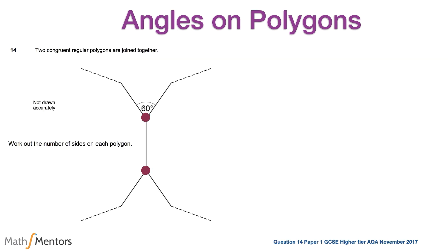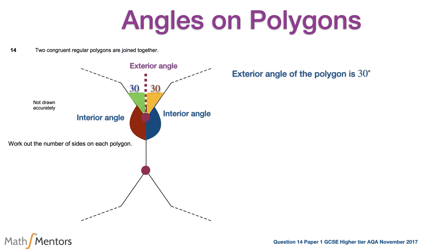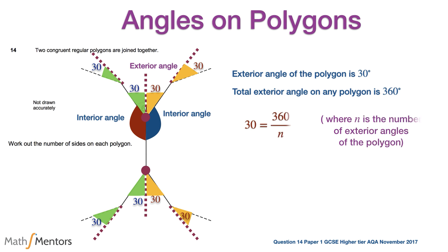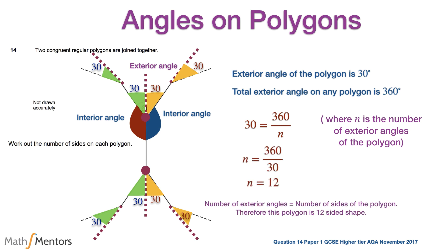In this final question, we are given an exterior angle of 60 degrees and two congruent partially drawn regular polygons. The exterior angle of each regular polygon is 30 degrees, and all exterior angles are equal. Since all exterior angles of a polygon add up to 360 degrees, we divide 360 by 30 to find n = 12. Since the number of exterior angles equals the number of sides, this shape must be a 12-sided polygon.